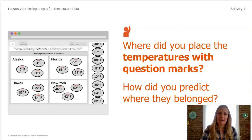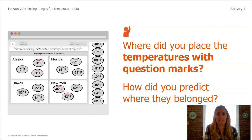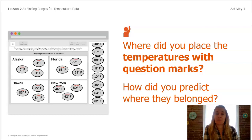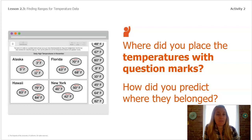Now let's think back. Where did you place the temperatures with the question marks? Remember, they went with all the other temperatures that were similar. Alaska temperatures were all between about 3 degrees and 11 degrees. Florida temperatures were between 63 and 70. Hawaii temperatures between 79 and 84. And New York temperatures between 42 and 50. How could you predict where these temperatures belonged? You were able to make predictions because of those patterns, just like the ovals in the first activity.